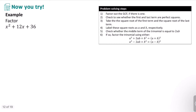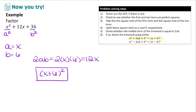Pause the video and try this example on your own. The first term is x² and the last term is 36, so a equals x and b equals 6 (the square root of 36). Then 2ab = 12x, which matches the middle term. We have a plus sign, so this factors as (x + 6)².